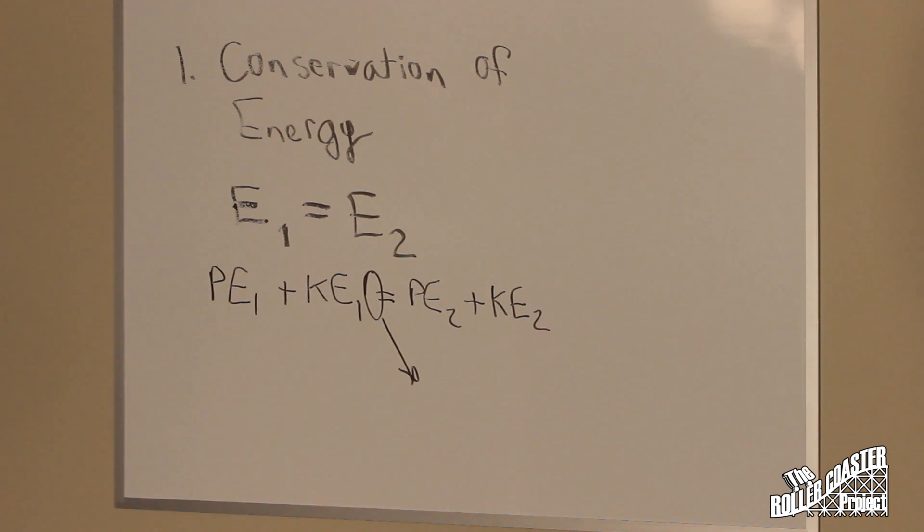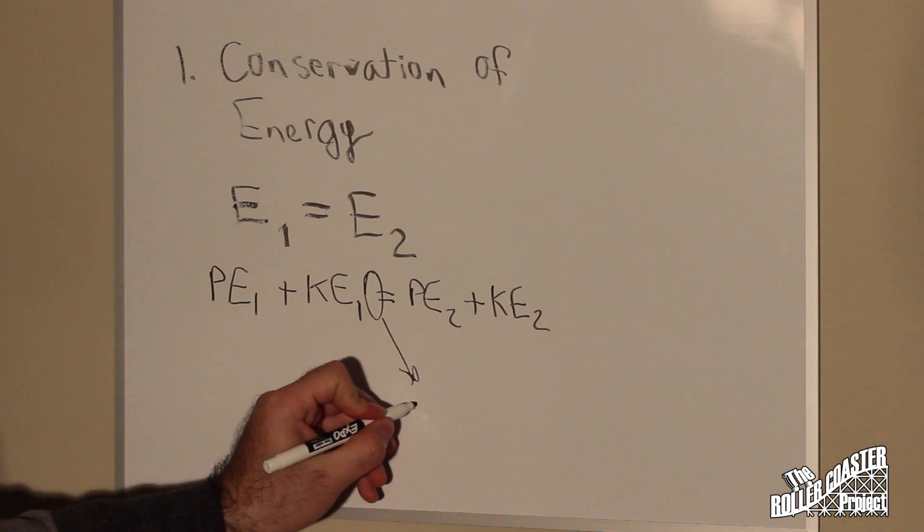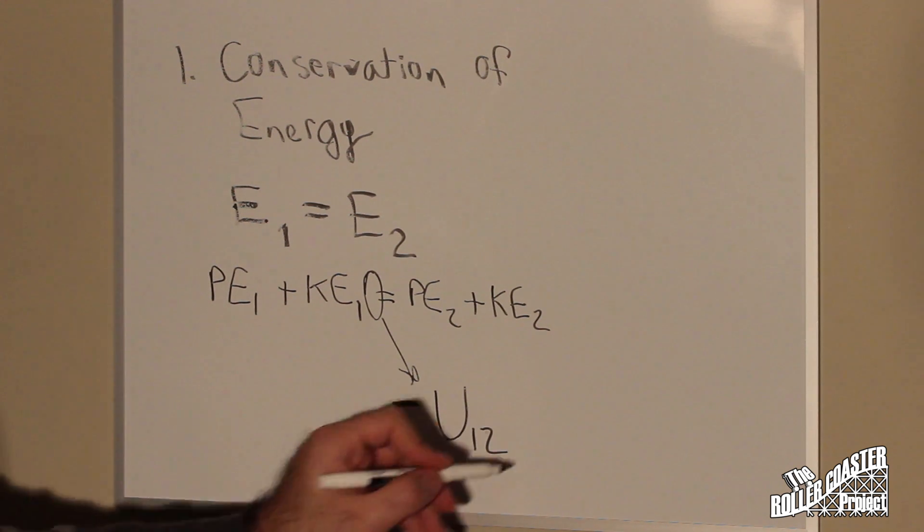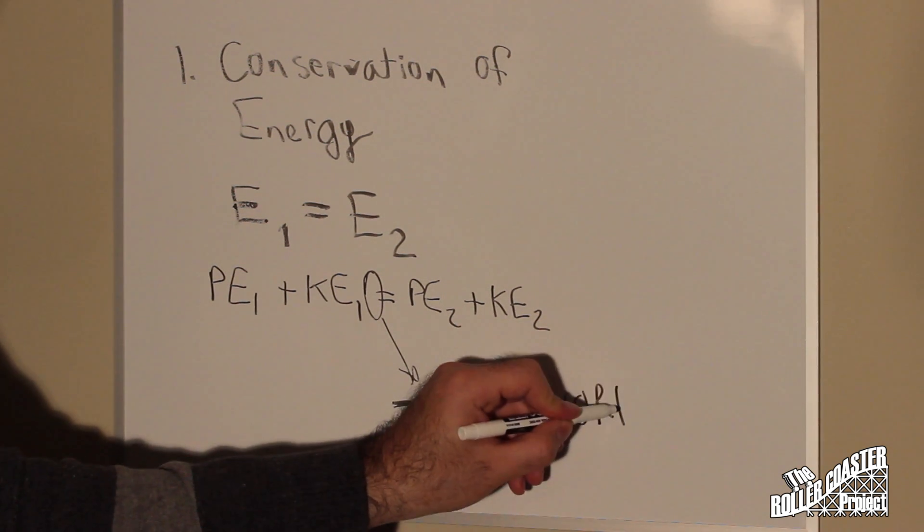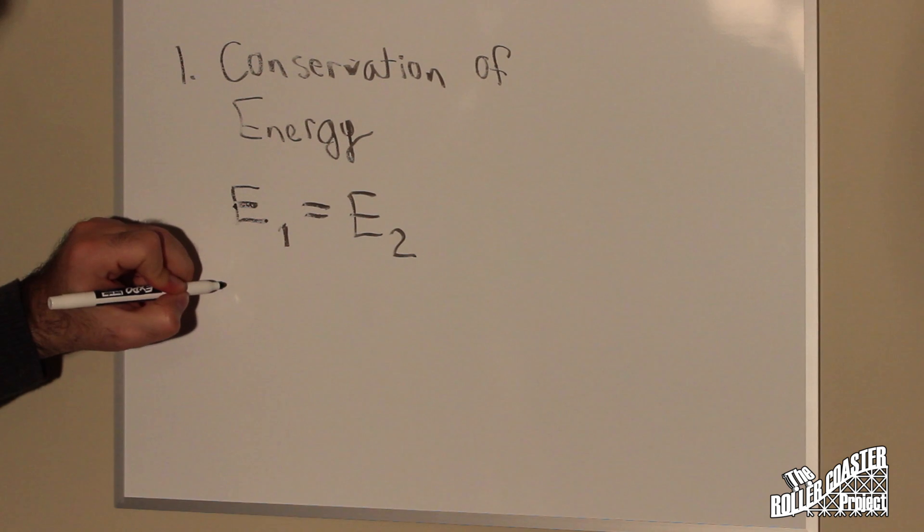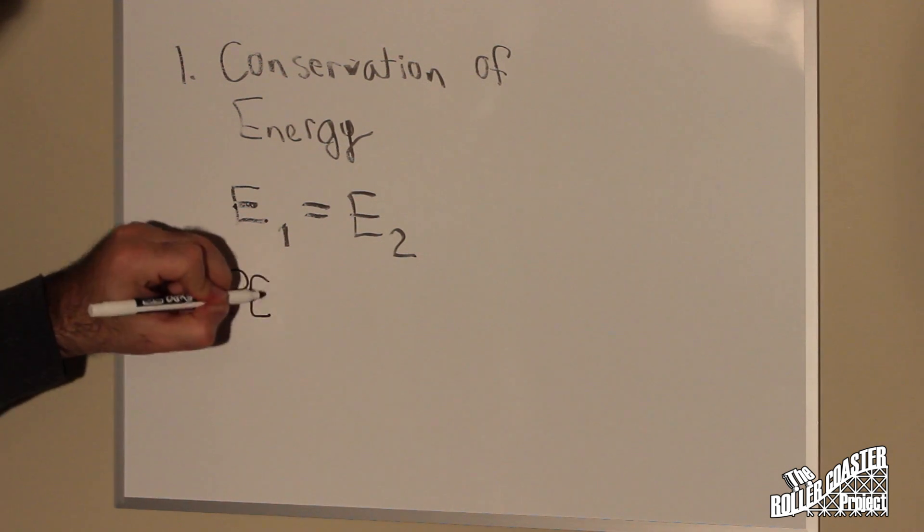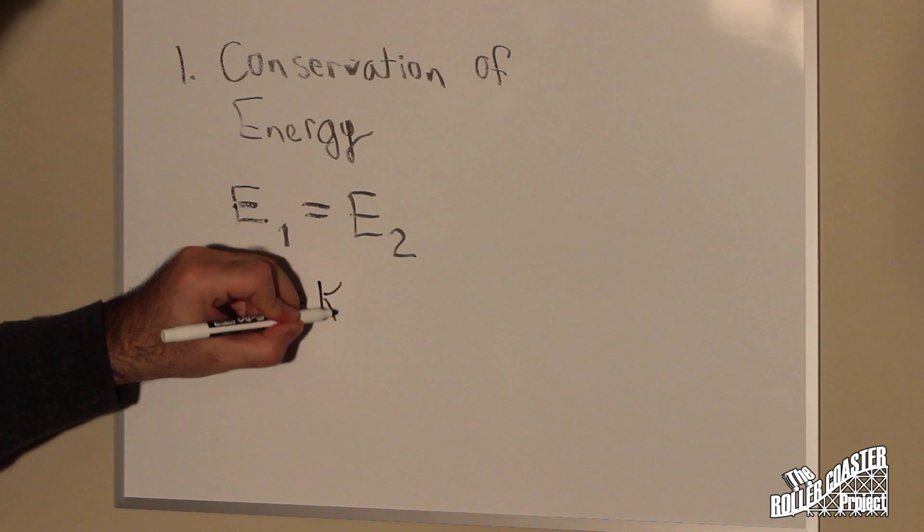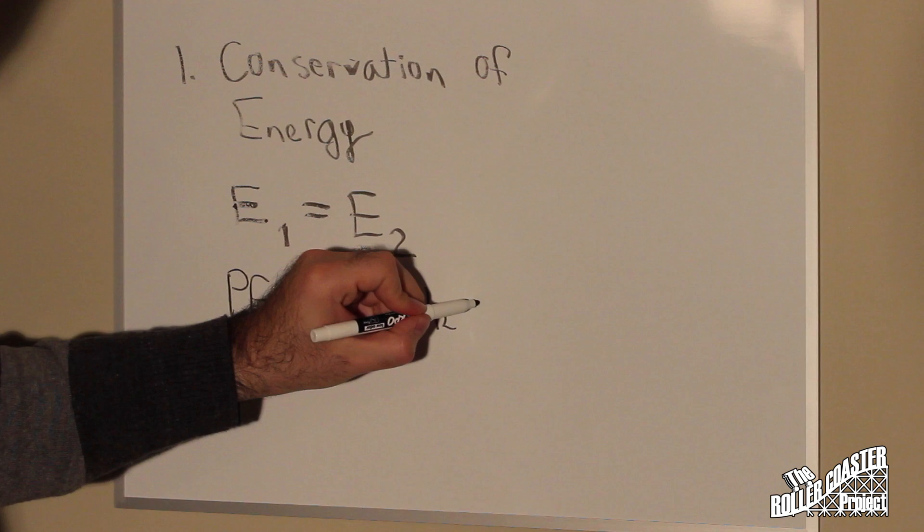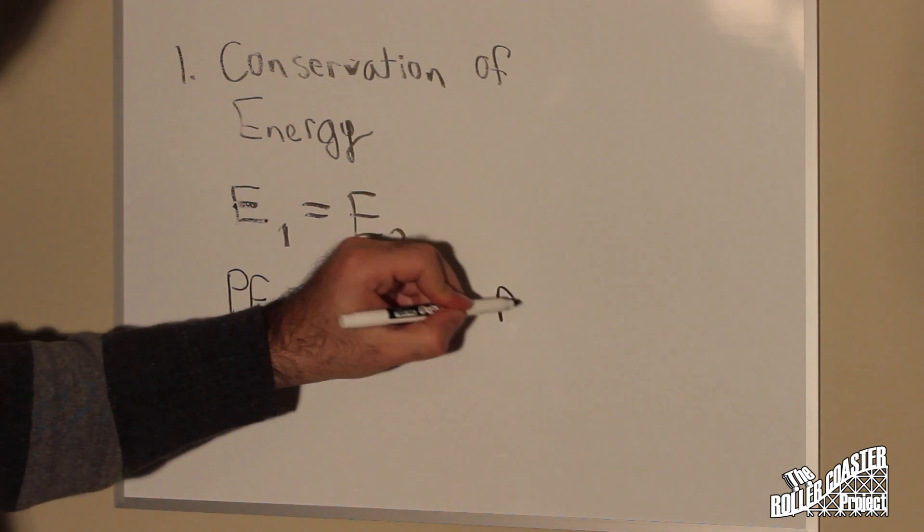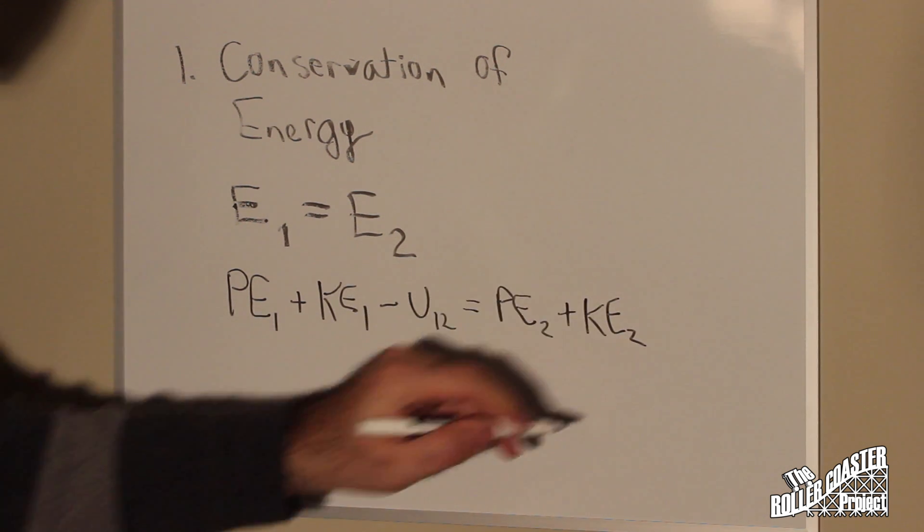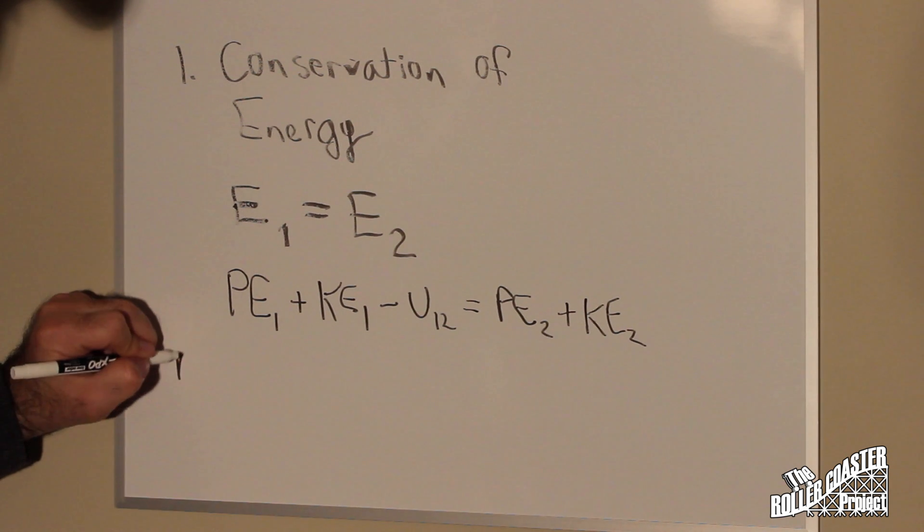But there's something missing. We call this negative work from point one to two. Or for cases like a roller coaster, we're going to call this friction. So let's rewrite the equation, adding in the appropriate variable. We have our initial potential and kinetic energies minus our work because we always lose some energy due to friction, due to drag, due to some other outside factor. And that energy is actually lost and expelled as heat.